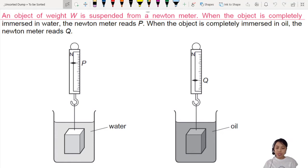This is a pretty interesting way of asking this question. You have two blocks hanging from a Newton meter and soaked in two different liquids. If you pay close attention, both Newton meters actually have a different reading. P is kind of up here, Q is down there.